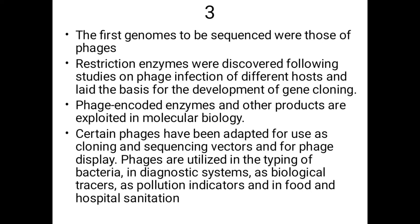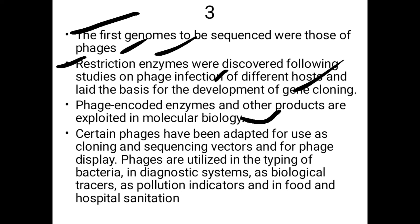The first genomes to be sequenced were those of the phages. Restriction endonucleases, which are used in genetic engineering to cut precise sequences of DNA, were discovered following study on phage infection of different hosts and laid the basis for the development of gene cloning. Phage-encoded enzymes and other products are exploited in molecular biology, and certain phages have been adopted for cloning and sequencing vectors and for phage display.